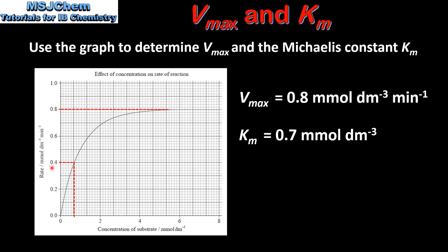For the Michaelis constant Km, we find the value which is half the Vmax, which on this graph is 0.4 millimoles per decimeter per minute. If we draw a line to where it meets the curve and then draw a vertical line, this tells us the value of the Km, which is 0.7 millimoles per decimeter.